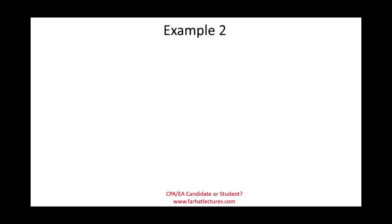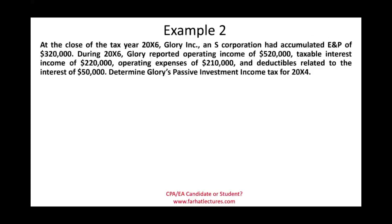Second example: At the close of tax year 20X6, Glory, an S-Corporation, has accumulated E&P of $320,000. During 20X6, Glory reported operating income of $520,000, taxable interest income of $220,000, and deductible expenses related to the interest of $50,000 — for example, interest expense on money borrowed to buy bonds that generated the taxable interest income.